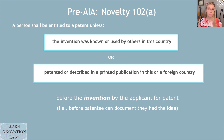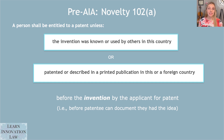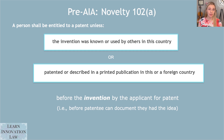Alternatively, if the invention was patented or described in a printed publication anywhere, whether here or in a foreign country. Interestingly, this publication doesn't have to be a really official journal article — some courts have found that even somebody's thesis buried in a library somewhere in a foreign country could still be a printed publication for purposes of the prior art novelty requirement under Section 102. This is true both for the pre-AIA and post-AIA versions of the statute.